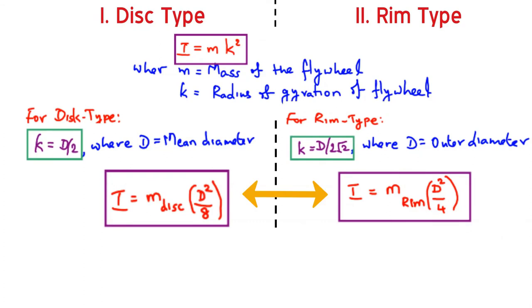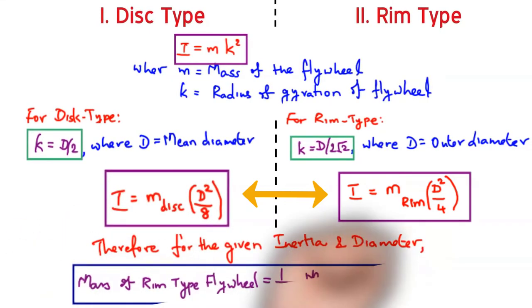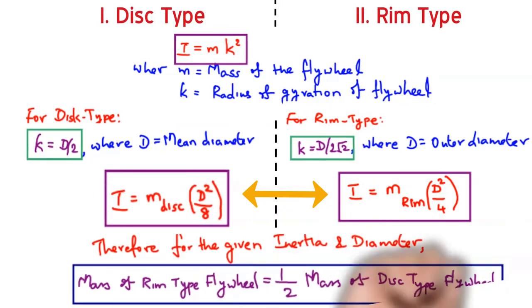Compare both mass moment of inertia for the same mass moment of inertia and the same diameter of the flywheel. Obviously, mass of the rim type requires just half of the disc type flywheel.